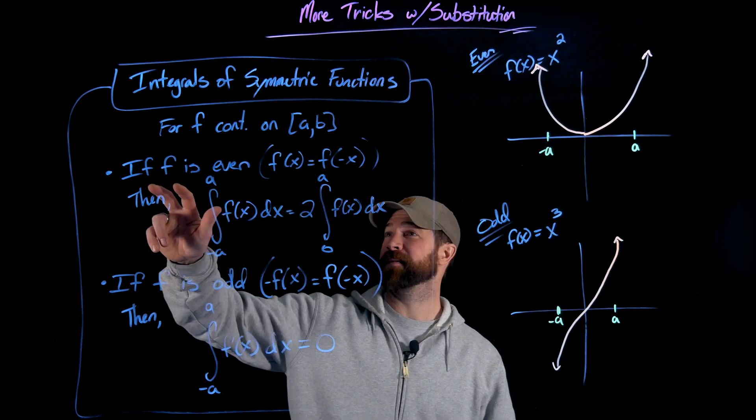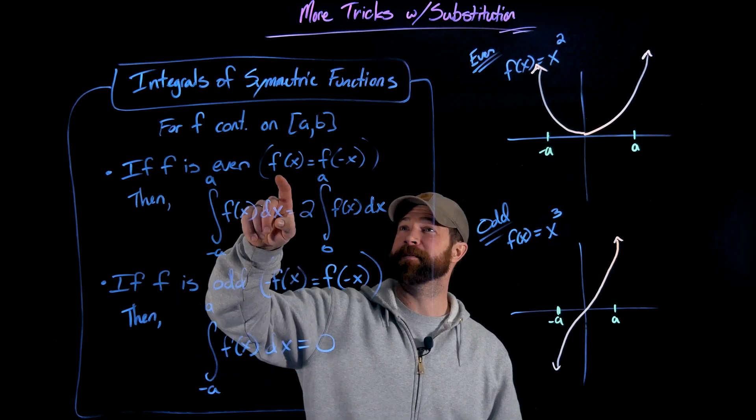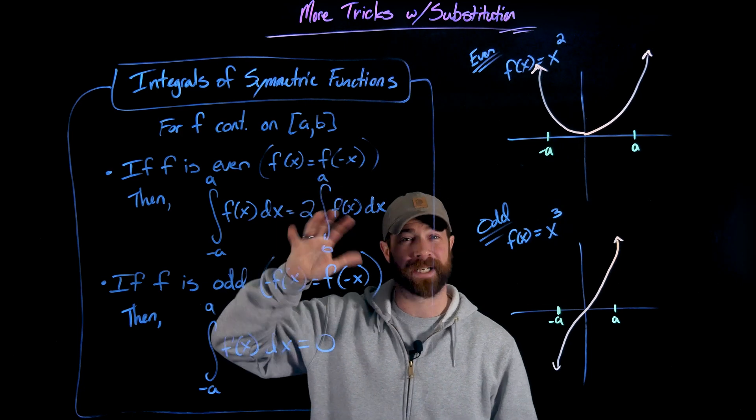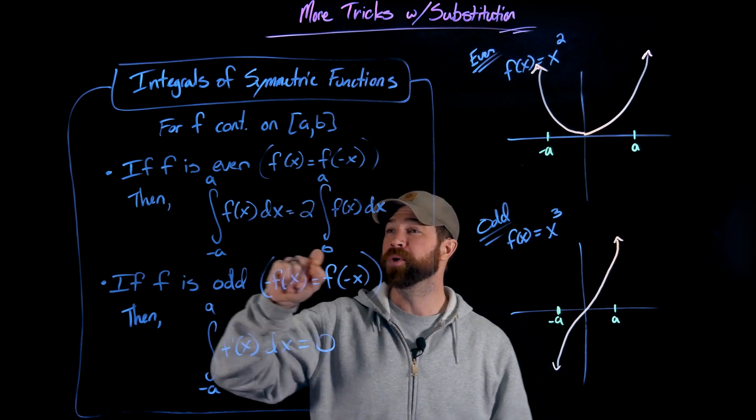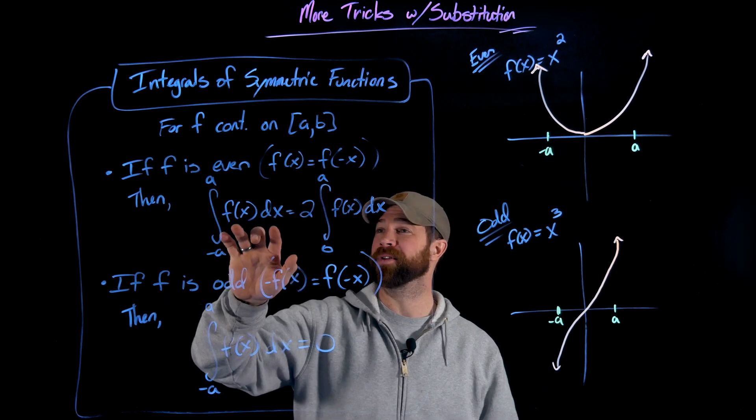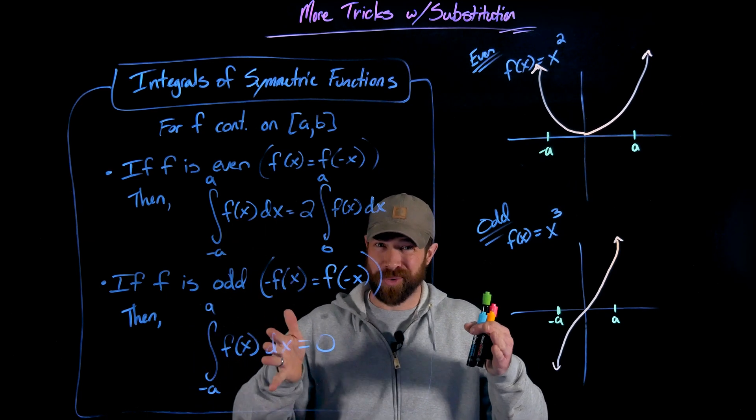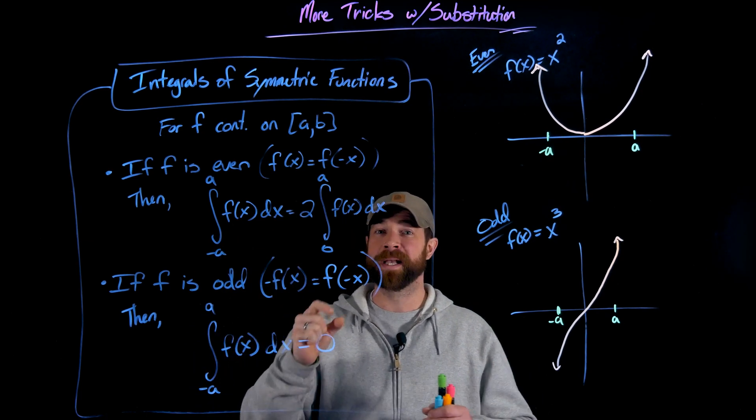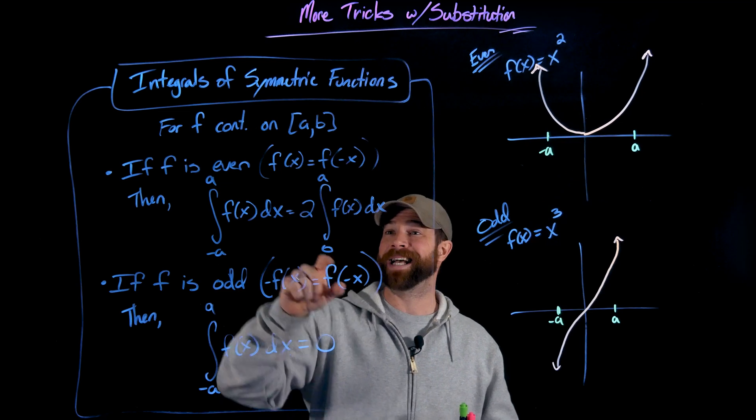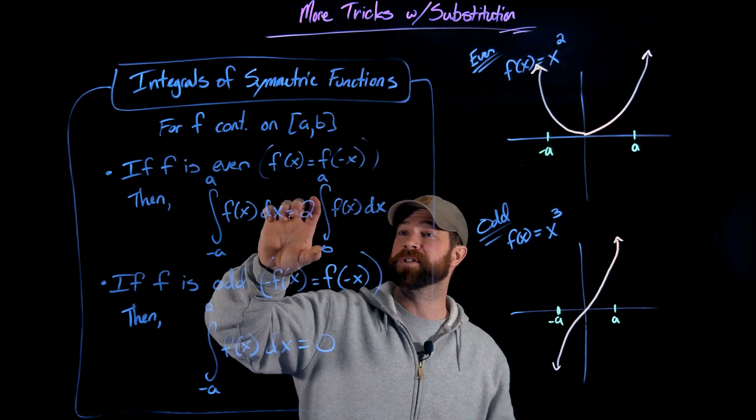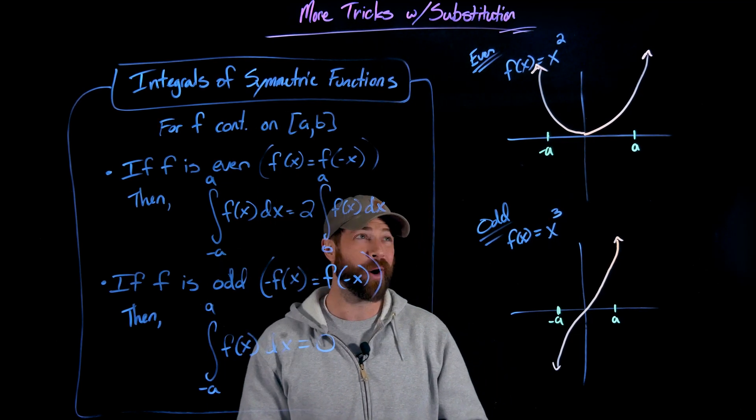So an even function, if f is even, and this means that f(x) equals f(-x) for every x value. When you integrate from negative a to a on that function, so you're on this span going through the origin from negative a to a, you can also calculate that as two times just going from zero to a.